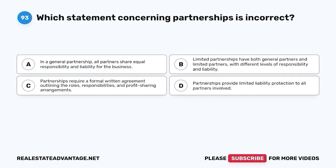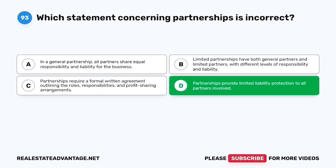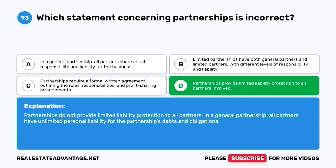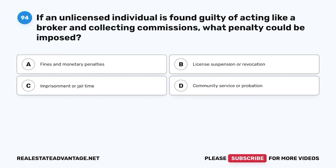Question 93. Which statement concerning partnerships is incorrect? A. In a general partnership, all partners share equal responsibility and liability for the business. B. Limited partnerships have both general partners and limited partners with different levels of responsibility and liability. C. Partnerships require a formal written agreement outlining roles, responsibilities, and profit-sharing arrangements. D. Partnerships provide limited liability protection to all partners involved. The correct answer is D. In a general partnership, all partners have unlimited personal liability for the partnership's debts and obligations.